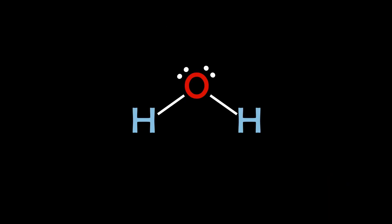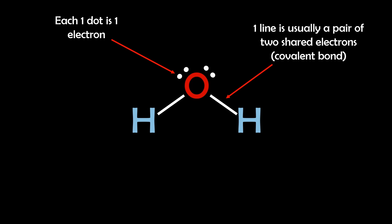In a Lewis structure each dot represents a valence electron and each line mainly represents a pair of shared electrons forming a covalent bond.